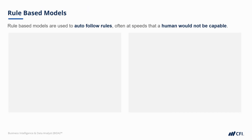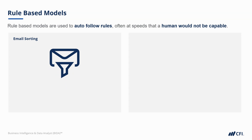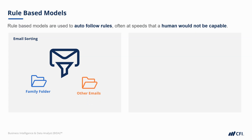Rule-based models are used to automatically follow rules, often at speeds that a human just wouldn't be capable of. A simple example: known family email addresses might get moved to a family folder, whilst all others go to the inbox. That's a basic rule-based model.